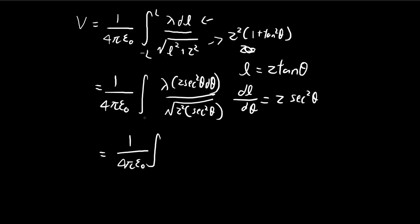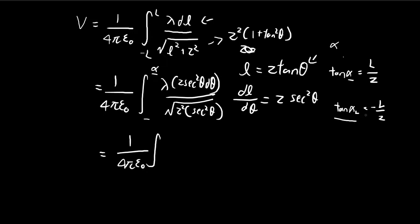The next thing we need to do is determine the upper and lower bounds. The upper bound I'll call alpha, defined such that tangent of alpha equals L divided by Z. Since the integral goes from negative L to L, the lower bound corresponds to tangent equal to negative L over Z. Thanks to the fact that tangent is an odd function, the lower bound is negative alpha. So the bounds go from negative alpha to alpha.